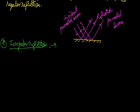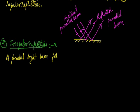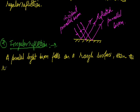When a parallel beam falls on a rough surface, then the reflected beam will not be parallel. A parallel light beam falls on a rough surface, and then the reflected beam is not a parallel beam.